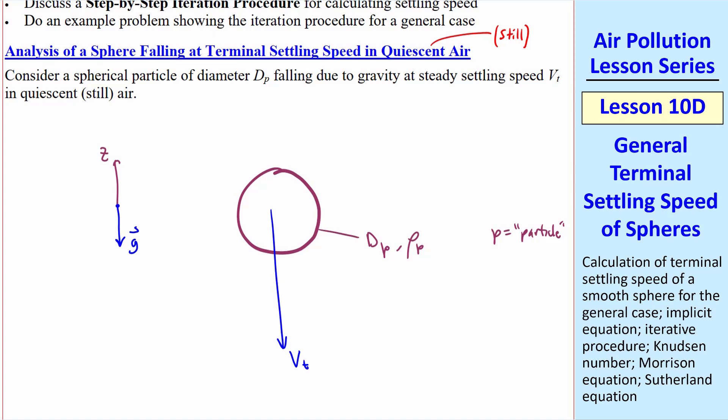If this particle is released at time zero, it will accelerate but eventually reach a steady settling speed vt. The steady settling speed is called the terminal settling speed, vt.